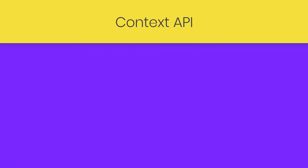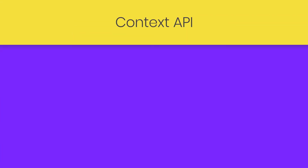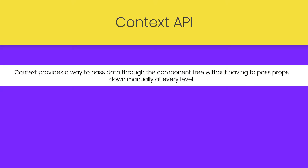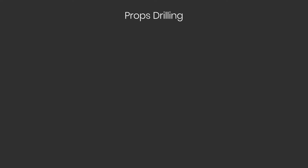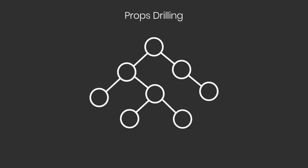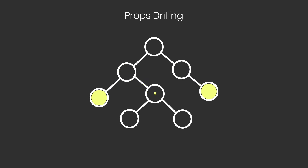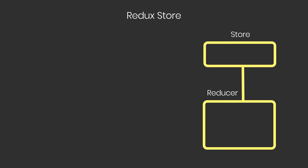In this lecture we're going to understand the very important topic of React, which is Context API. Context provides a way to pass data through the component tree without having to pass props down manually at every level. Prop drilling is the process of getting data from component A to component Z by passing it through multiple layers of React components, which makes components complex and adds complexity.